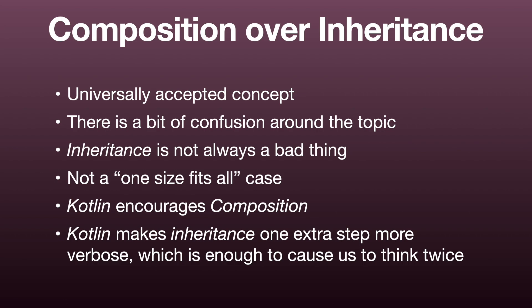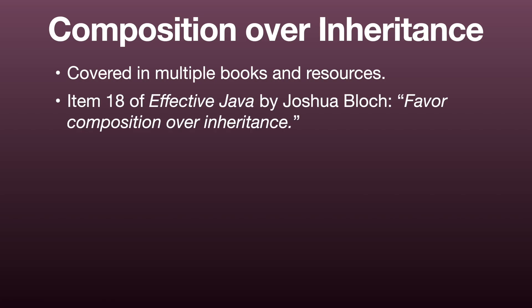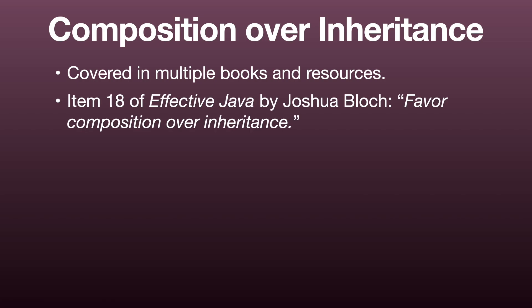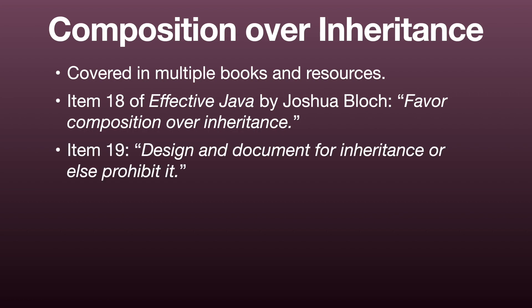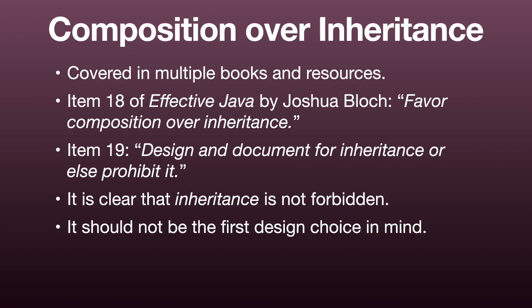The idea of composition over inheritance has been covered in multiple books and resources, and one of them is Joshua Bloch's Effective Java. In this book, item 18 is called 'Favor Composition Over Inheritance' and item 19 follows up with 'Design and Document for Inheritance or Else Prohibit it.' It's clear that composition is generally favored, but that does not mean that inheritance is forbidden. We should still use inheritance as long as we explicitly designed our classes for it.